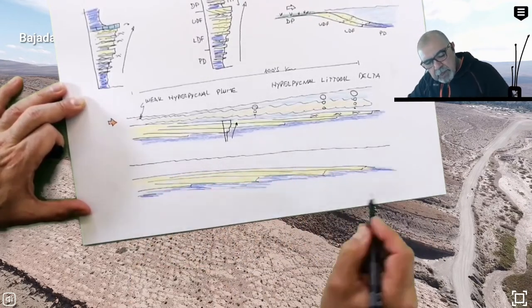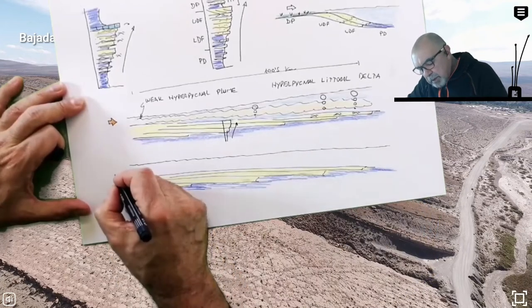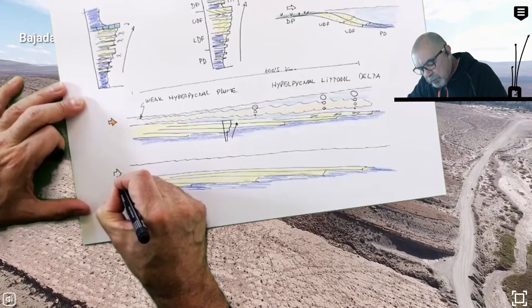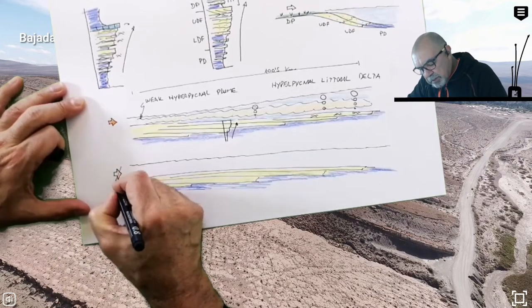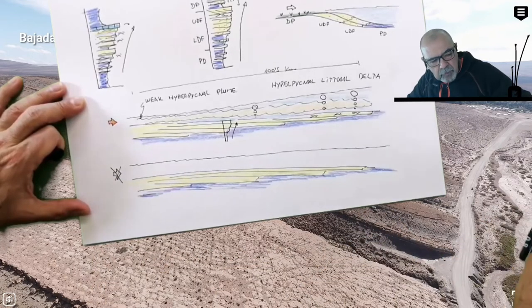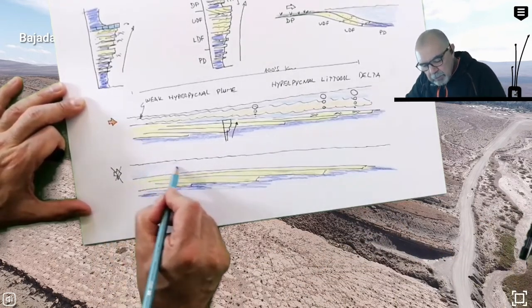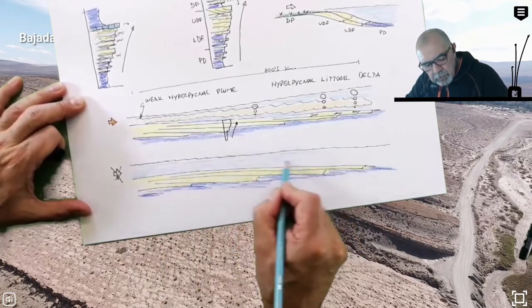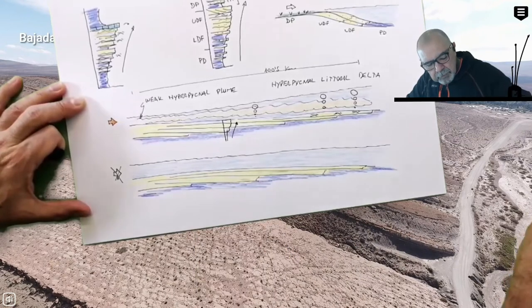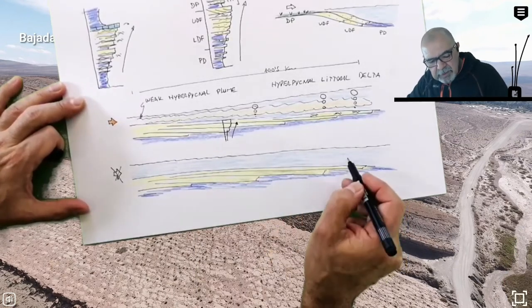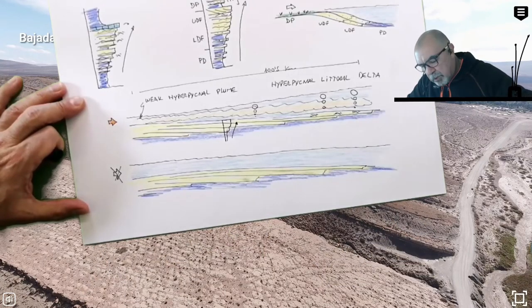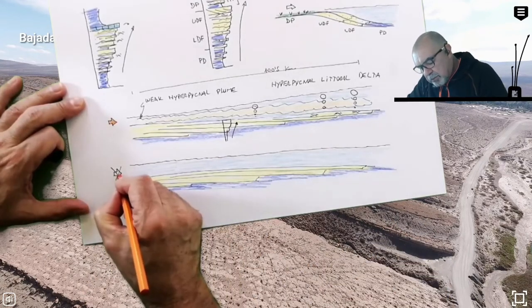...you can have that this progradation at some point, the sediment is not more supplied to the basin. So you have this clastic ramp, shallow water progradational ramp in which we don't have more this weak hyperpycnal flow. So all this area increases the salinity because we stop the introduction of freshwater by these rivers.